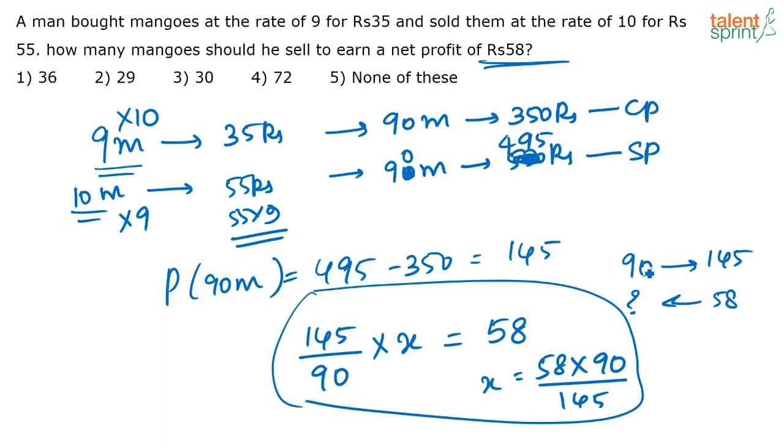But in the exam actually, you know that 90 mangoes, you make a profit of 145. For 58 rupees profit, how many mangoes should he sell? That is 36. So all of you have given me the answer correctly. I hope it is clear.